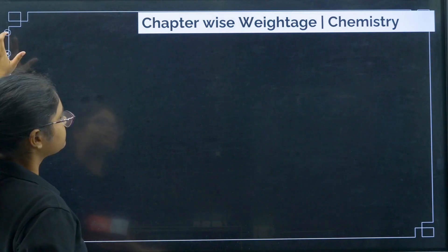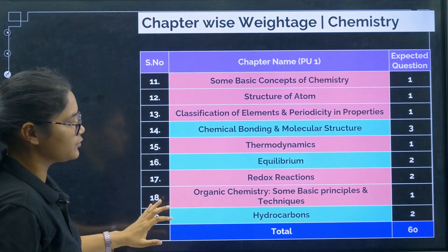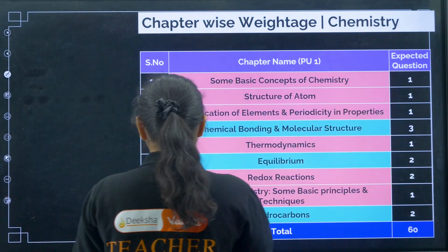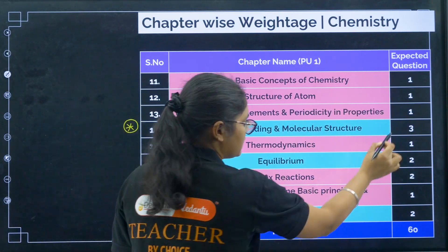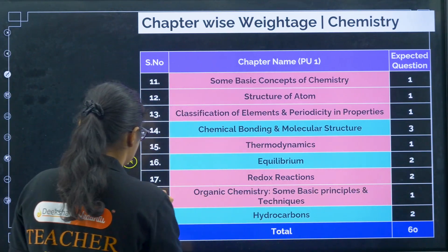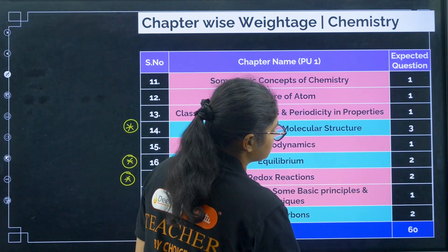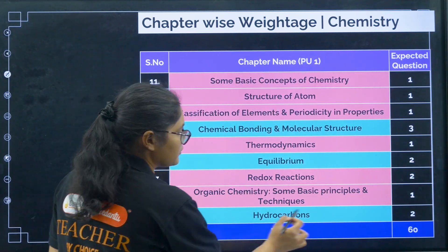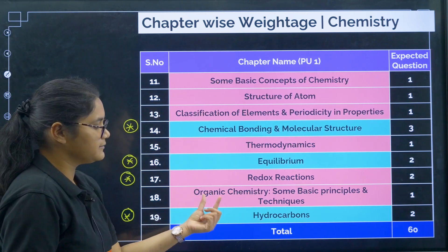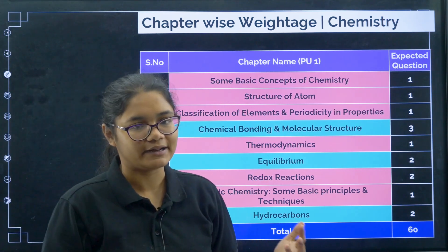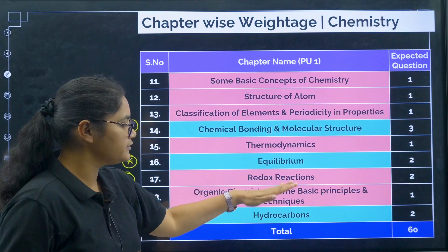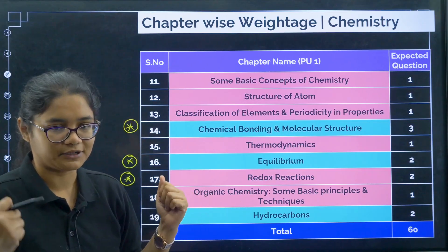Now coming to the PU1 syllabus — you can expect just 1 question from most chapters, except for certain very important ones. Chemical Bonding is where you can expect 3 questions. Then Equilibrium, 2 questions. Redox Reactions, 2 questions. And Hydrocarbons, 2 questions. Organic chemistry and hydrocarbons go hand in hand — you need to know the basic fundamentals. Together these two chapters can give you 2 to 3 questions.